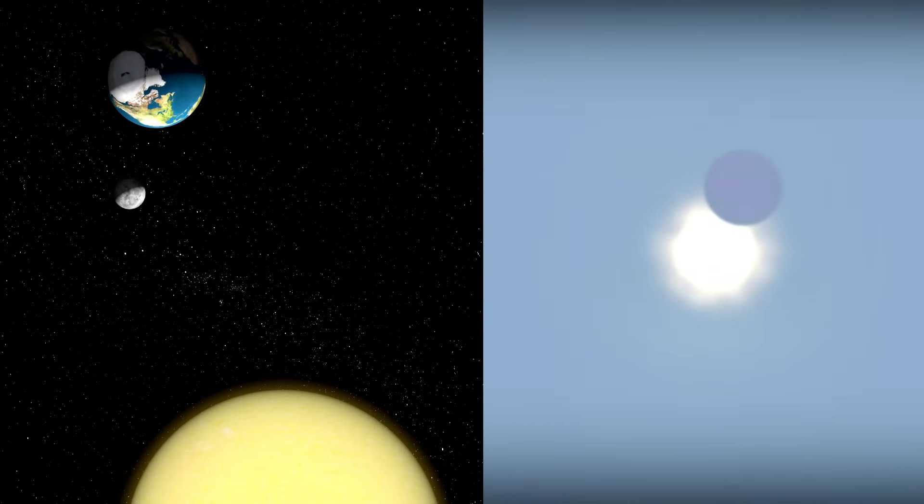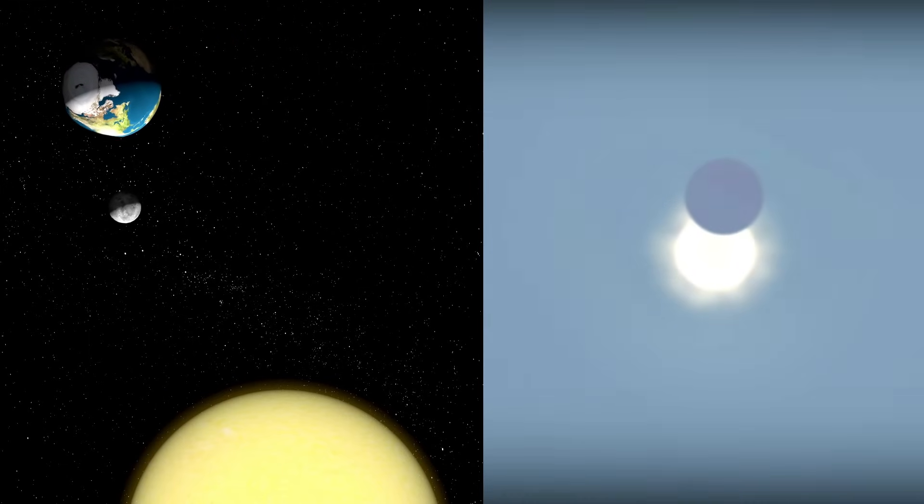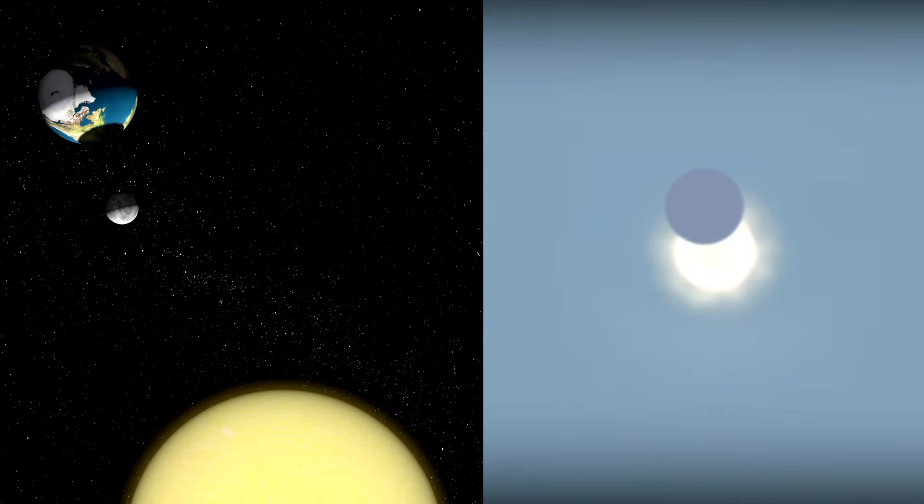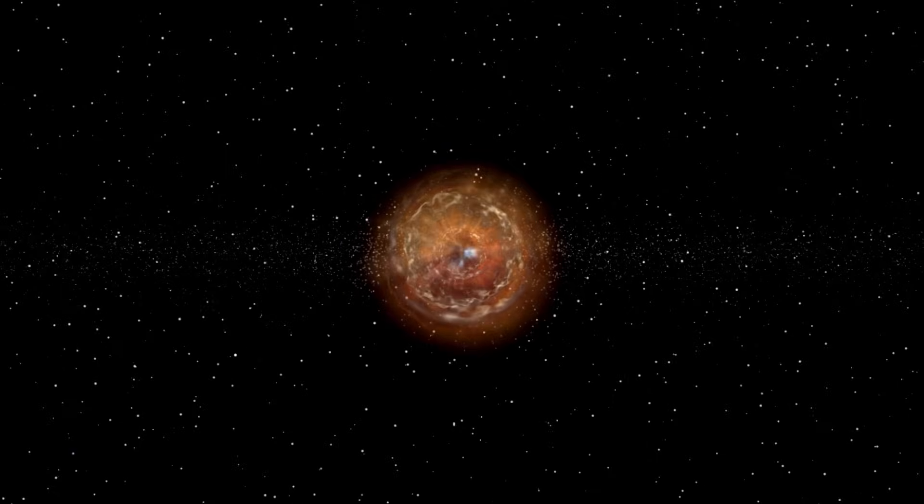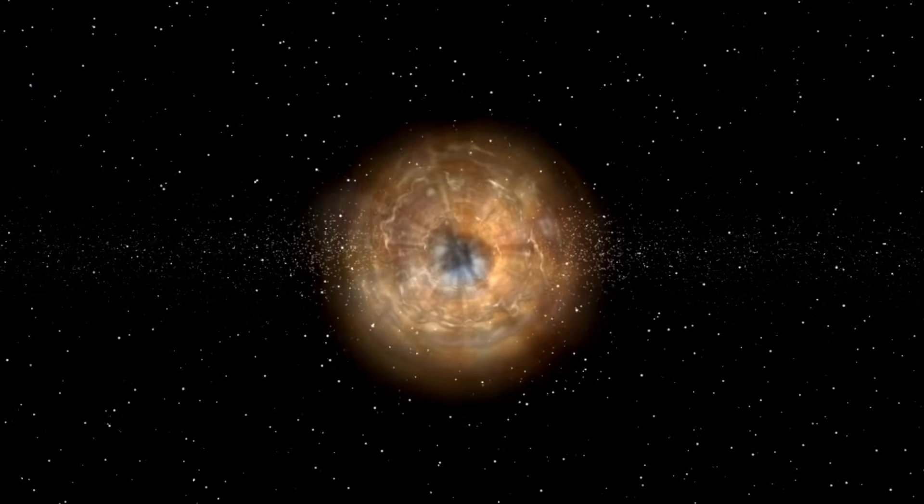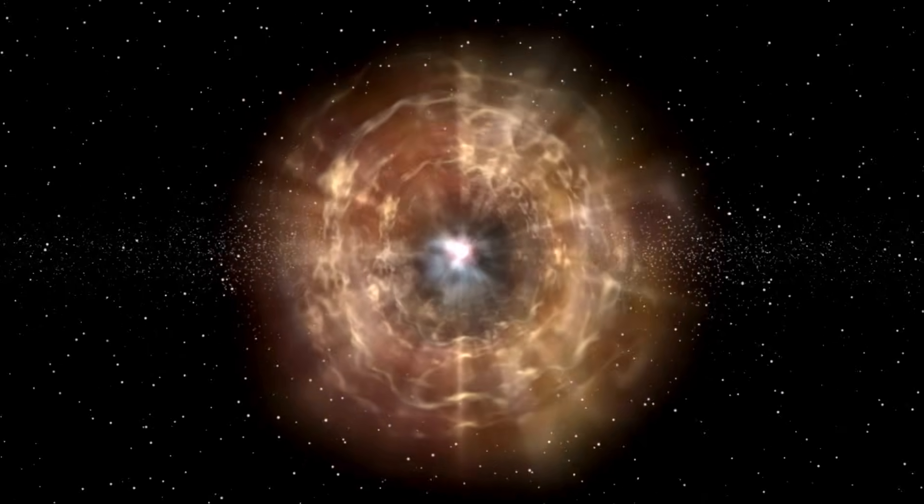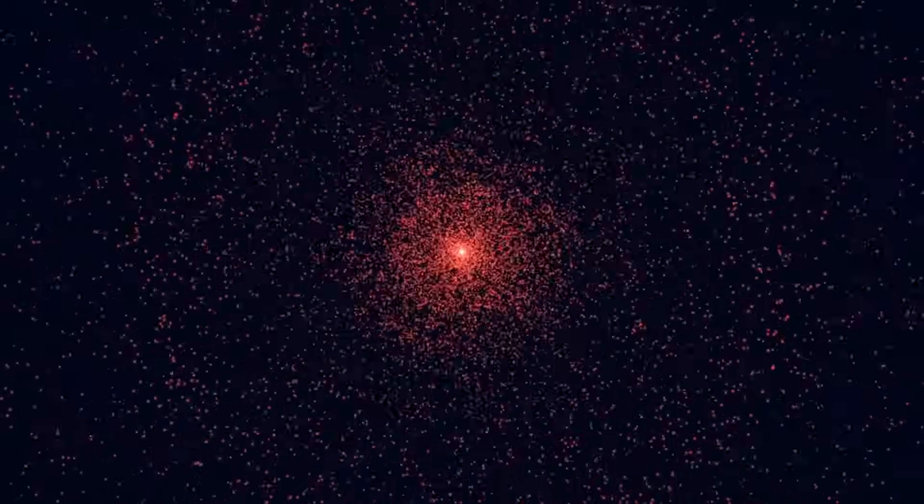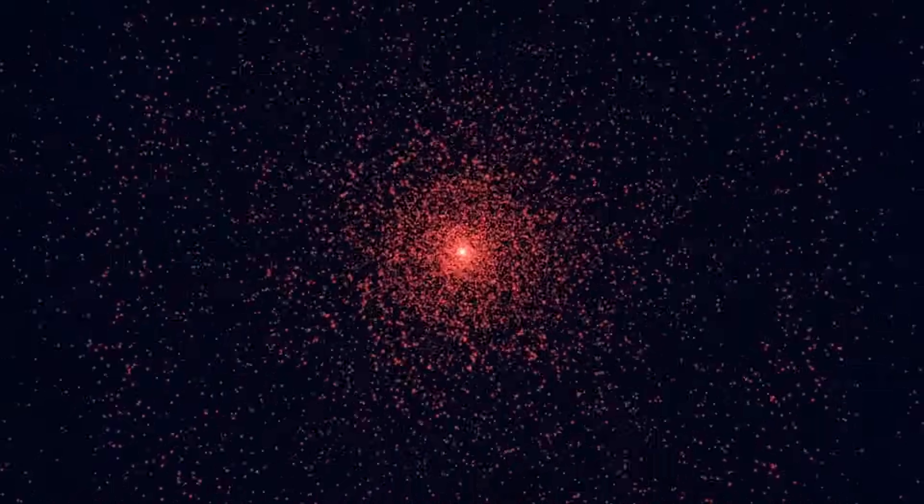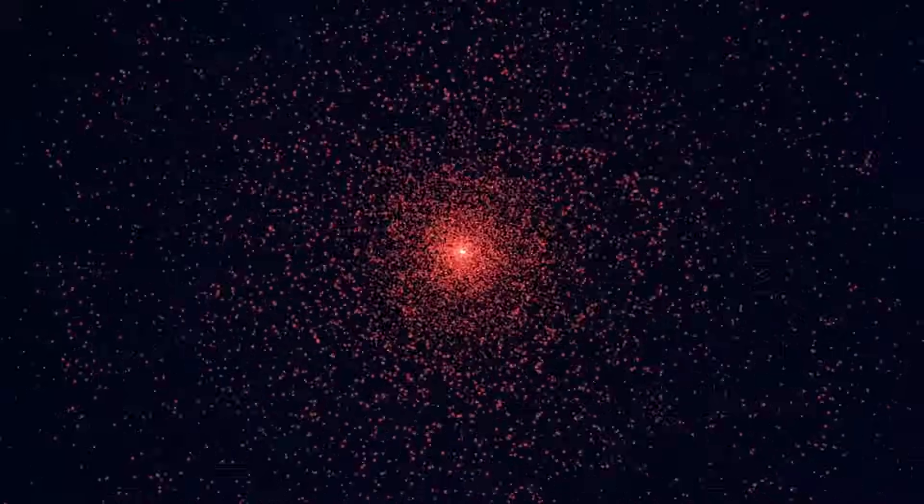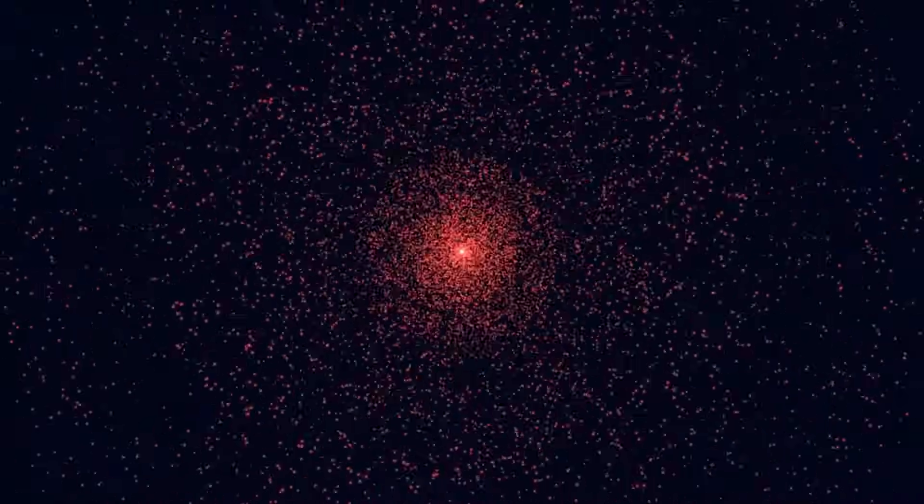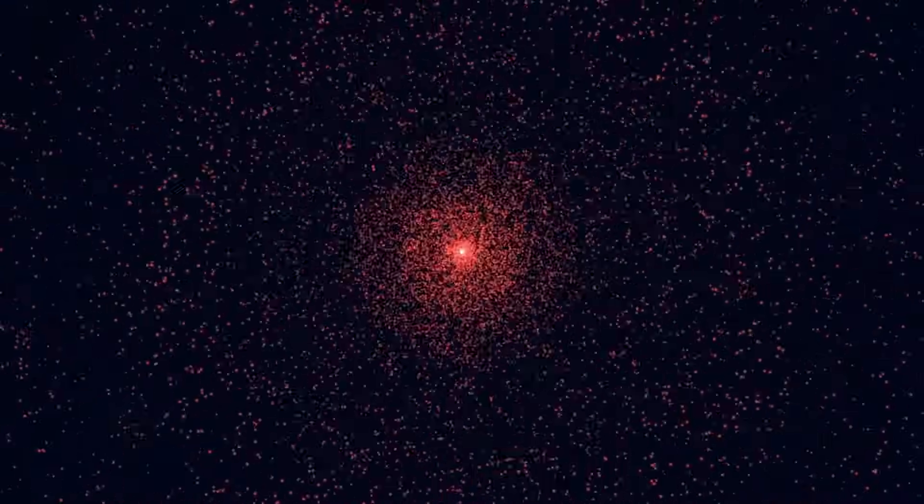Betelgeuse is also known for its fluctuating brightness. It's classified as a semi-regular variable star, meaning its brightness changes over a cycle of about 400 days, with longer fluctuations happening over a five-year period. While this behavior has been observed for centuries, the star has sometimes shown unexpected changes that don't fit known patterns.